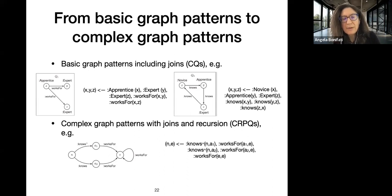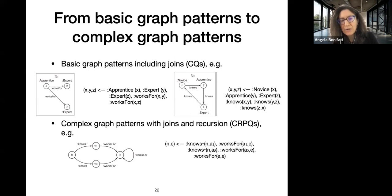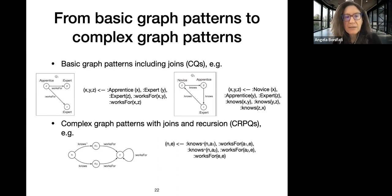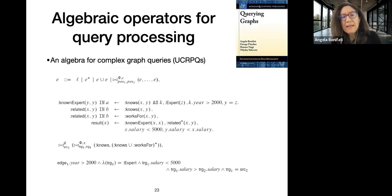In the complex graph pattern you can see a kleene-plus in the query. This query computes novices and experts where the experts are self-employed and connected to apprentices via a 'knows+' works-for path. We use concatenation of labels and kleene-plus, which is more complex than the basic graph patterns. You choose the expressivity of the query language depending on what your application or use case demands.